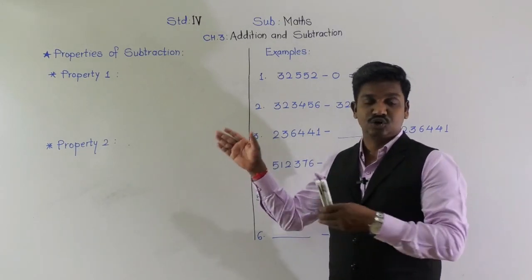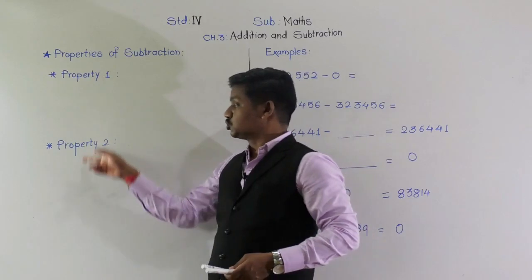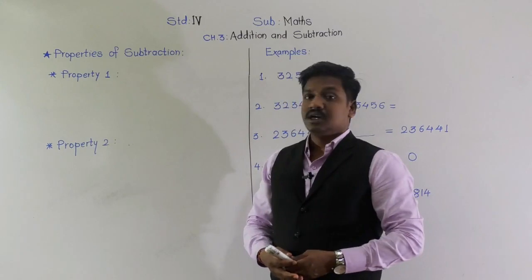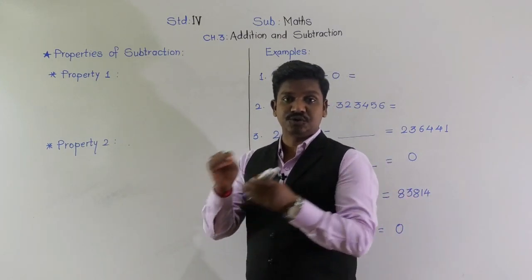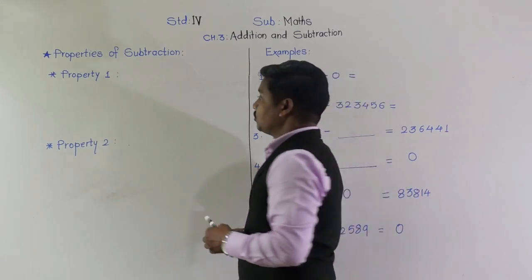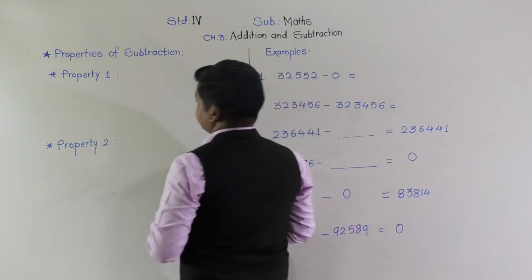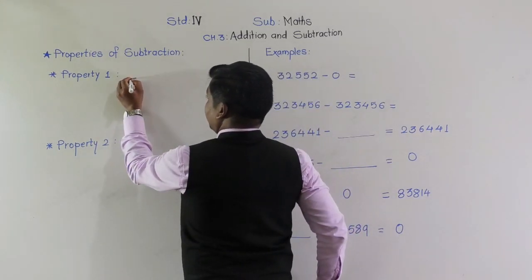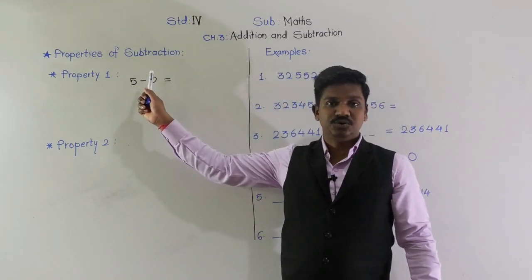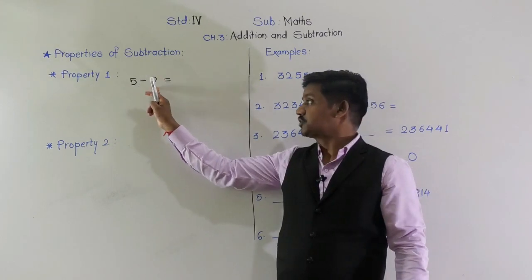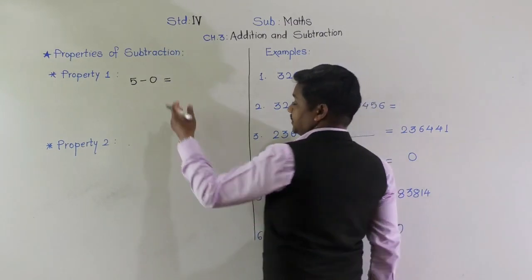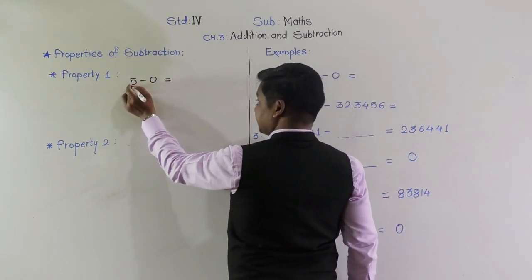There are two properties of subtraction. The first property: if we subtract zero from any number, what answer do we get? For example, 5 minus 0 — when we subtract 0 from any number, the answer is that number itself. So 5 minus 0 equals 5.